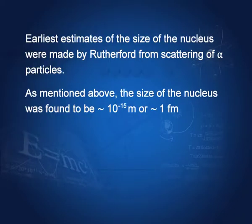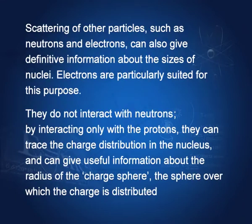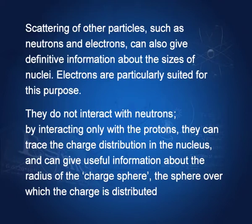Earlier estimates of the size of the nucleus were made by Rutherford from the scattering of alpha particles. The size of the nucleus was found to be about one Fermi, that is 10^(-15) meters. Scattering of other particles such as neutrons and electrons can also give information about the size of nuclei. Electrons are particularly suited because they are very light, they can penetrate, and they do not interact with neutrons.